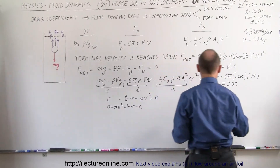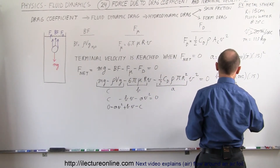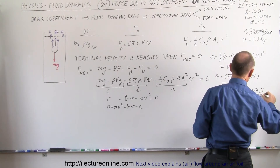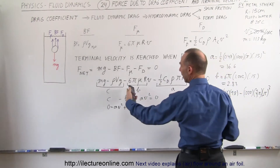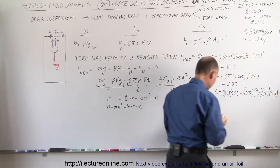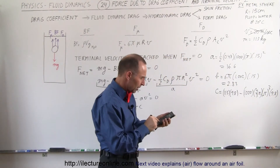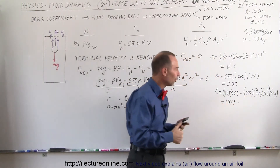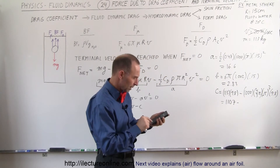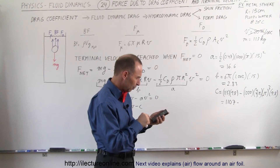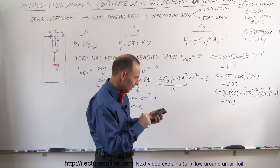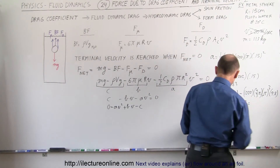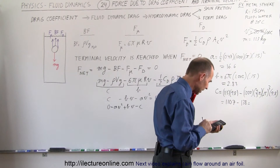C is the weight minus the buoyancy force. The weight is 113 × 9.8 = 1107 N. The buoyancy force is the density of water (1000) times the volume (4π/3 × 0.15³) times 9.8, which equals approximately 138 N. Therefore C = 1107 − 138 = 969 N.